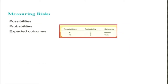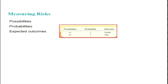Let's now discuss how to measure risk. Since you are familiar with the definition of investment risk, let's see what the approaches for measuring risk are. In the case of measuring risk, there are three aspects: possibilities, probabilities, and expected outcomes.